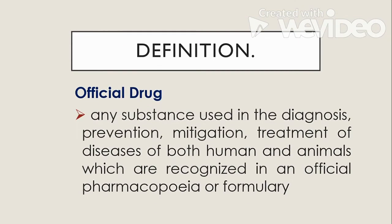Let's begin with the definition of an official drug. It is any substance used in the diagnosis, prevention, mitigation, and treatment of diseases of both humans and animals which are recognized in an official pharmacopeia or formulary. All drugs which can be found in the United States Pharmacopeia or National Formulary are considered official drugs. The current version is USP-43 and National Formulary 38.